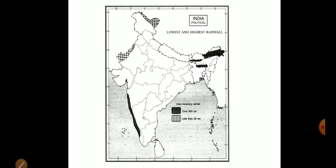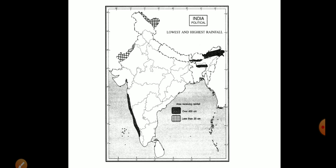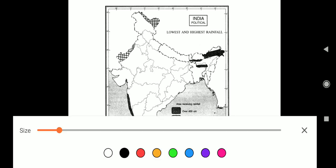3. Areas having less than 20 cm of annual rainfall. 4. Areas having more than 20 cm of annual rainfall.